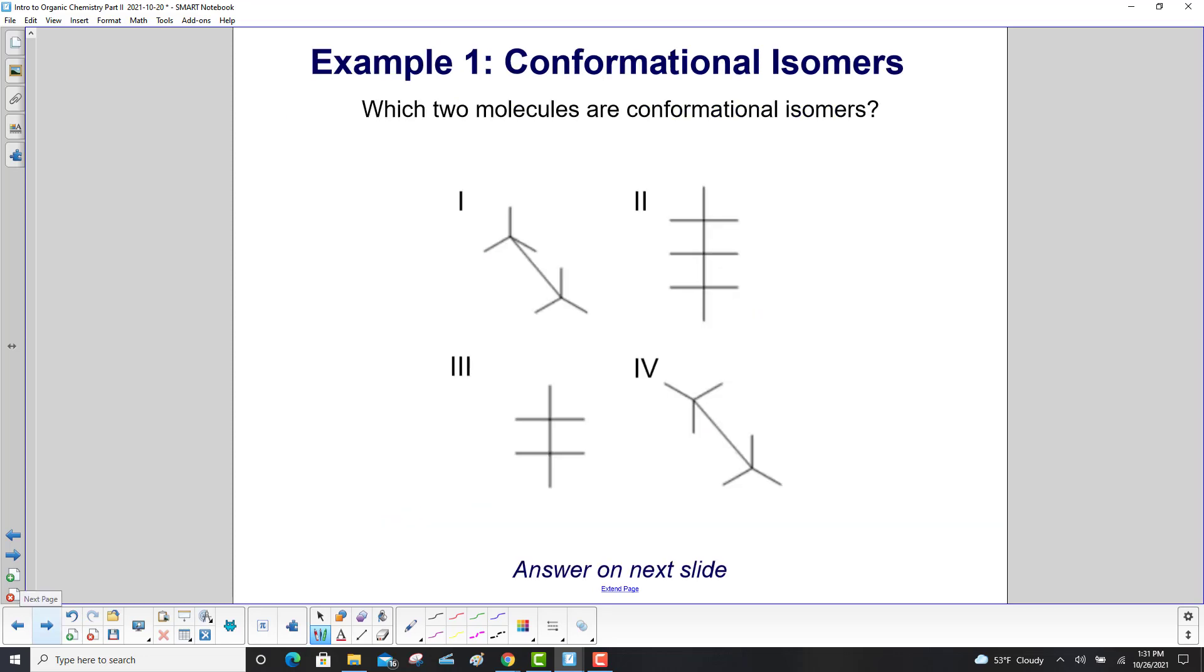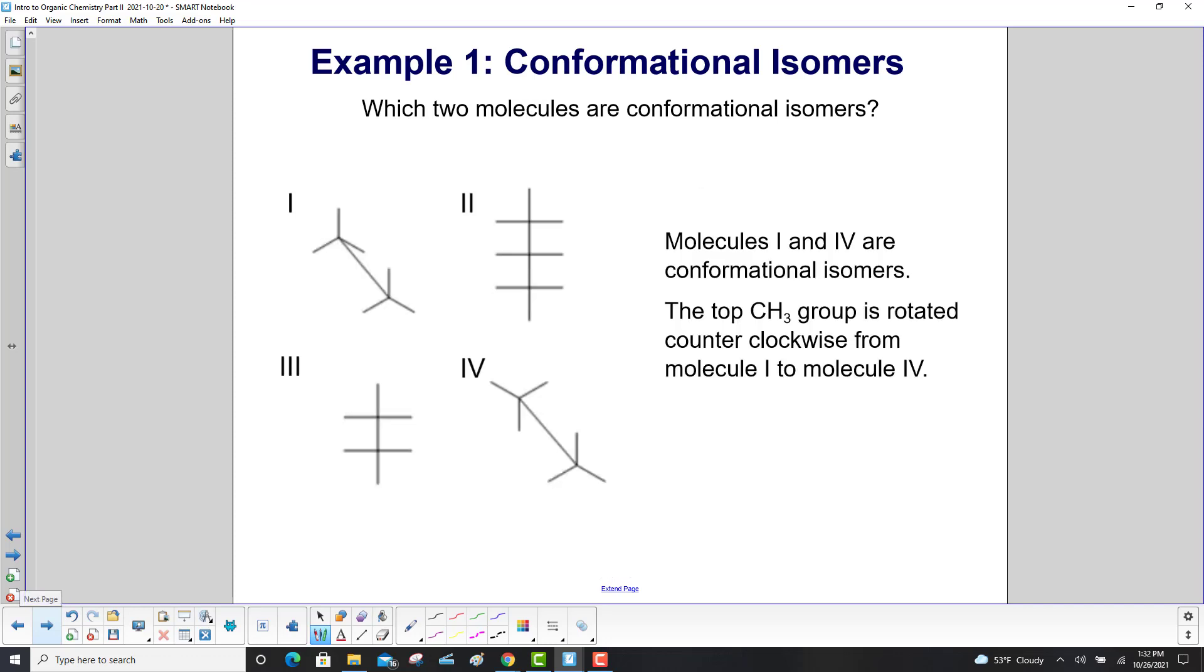Example one, which two molecules are conformational isomers. Molecules one and four are conformational isomers. The top CH3 group over here is rotated counterclockwise.